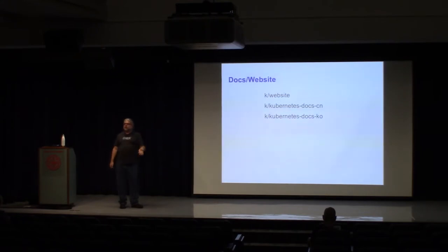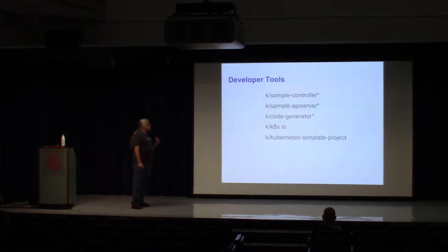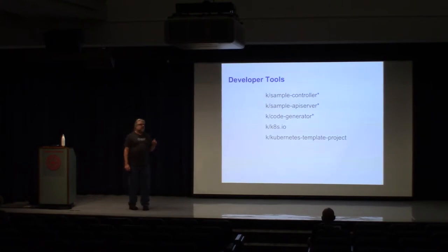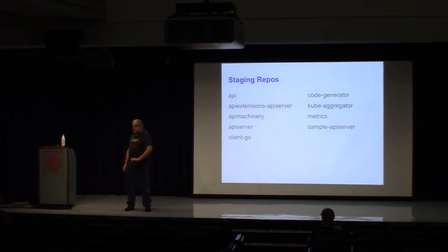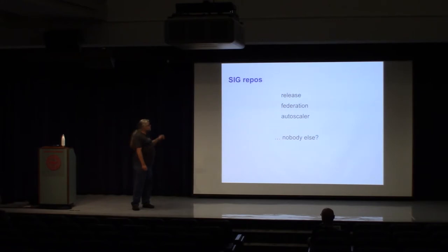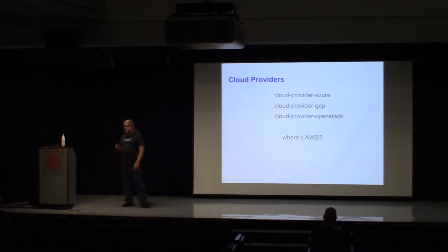We have the docs and website repo — which is actually called 'website,' not 'docs,' so if you're looking for the documentation repo look for 'website.' We're starting to have separate translation repos. There are repos devoted to tools for development of Kubernetes itself. There are staging repos, which are portions of kubernetes/kubernetes mirrored onto a separate repo for ease of development — if you're working on the API server, you'll likely spend time in a staging repo. Some SIGs have their own repos but most have directories within the main repos.